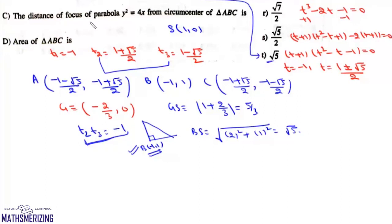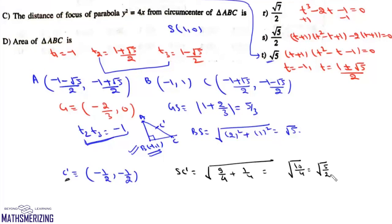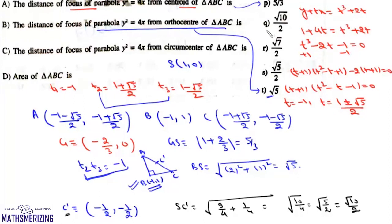For the circumcenter of right-angled triangle ABC: since it's a right-angled triangle, the circumcenter is the midpoint of the hypotenuse AC. A = (-(1+√5)/2, (-1+√5)/2) and C = ((-1+√5)/2, (-1-√5)/2). Their midpoint is (-1/2, -1/2). The distance from the focus (1, 0) to the circumcenter (-1/2, -1/2) is √((3/2)² + (1/2)²) = √(10/4) = √10/2. So the answer is option Q: √10/2.